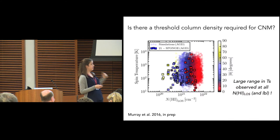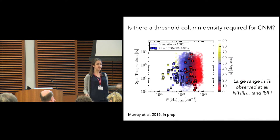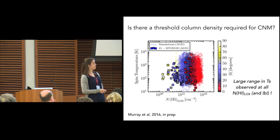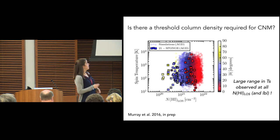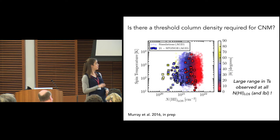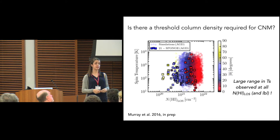Finally, we can compute fun things for these components such as spin temperature and column density. One thing we were investigating recently is the idea of a column density threshold required to form the CNM. Because we see the CNM everywhere in space, we want to know how it's formed and why. By plotting the spin temperature of individual spectral lines versus the total line of sight column density, we notice that we find a range of spin temperatures at all column densities probed and at all latitudes. This is a work in progress for understanding how the CNM is distributed in space.